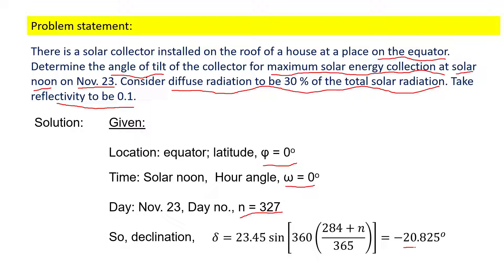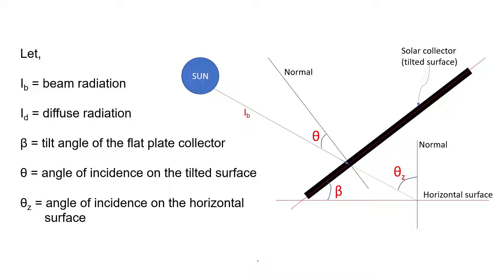The reflectivity is 0.4. Now let's show this entire problem through a schematic. Here is the Sun, then the solar radiation is coming at an angle of theta on this tilted surface.